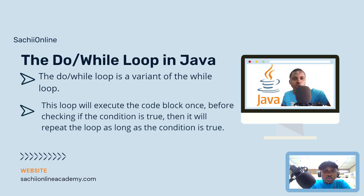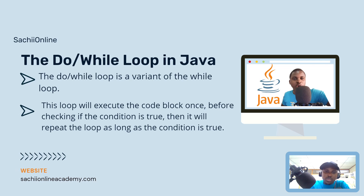So, the do-while loop in Java. The do-while loop is a variant of the while loop, so you need to know the while loop first before doing this. This loop will execute the code block once before checking if the condition is true, then it will repeat the loop as long as the condition is true. With the do-while loop, you do something first and then check the condition, so it is guaranteed that the code block will execute at least once.